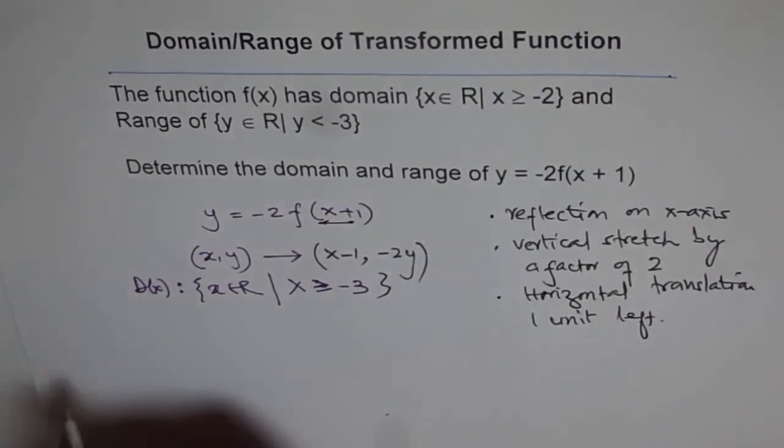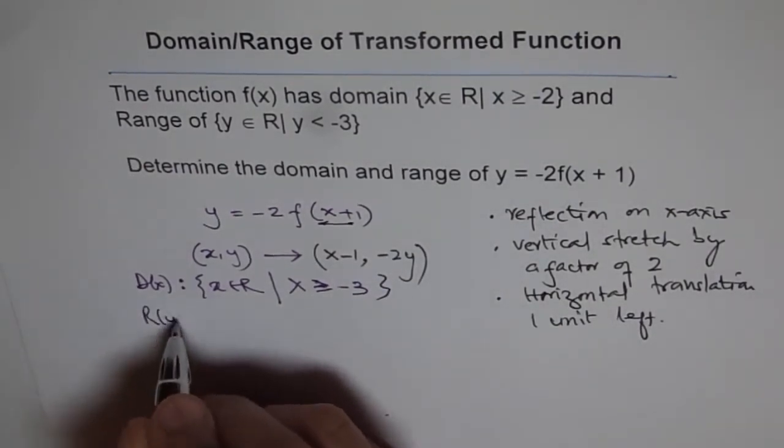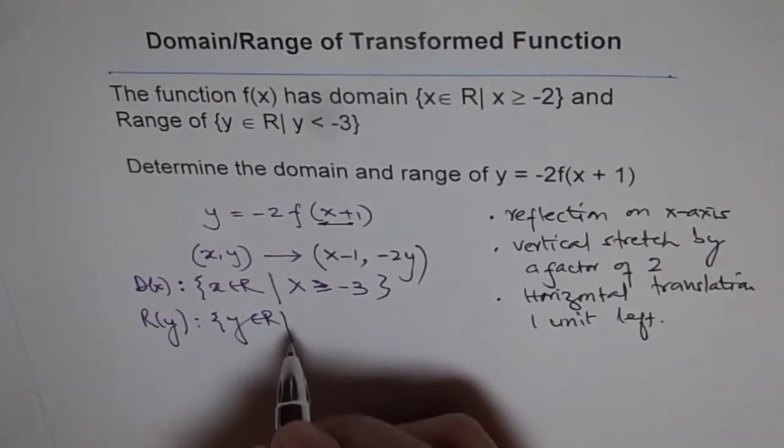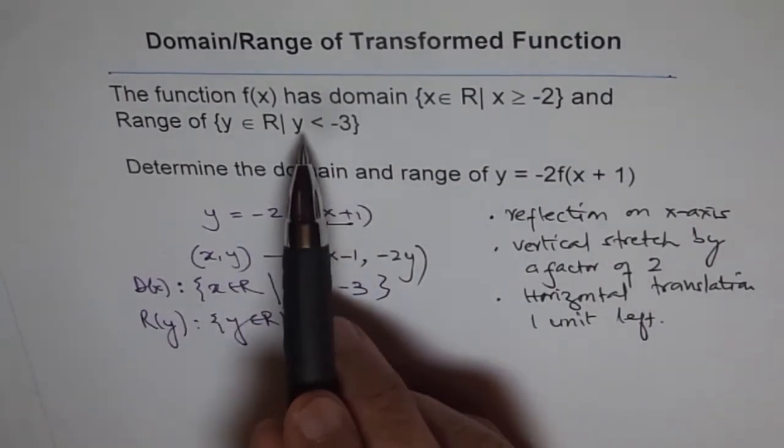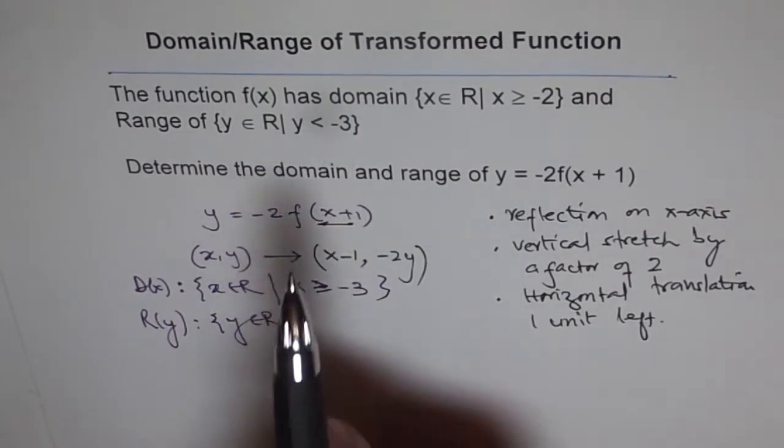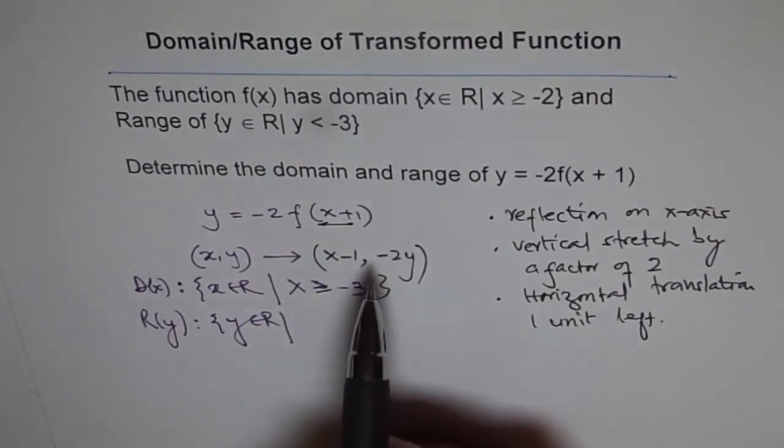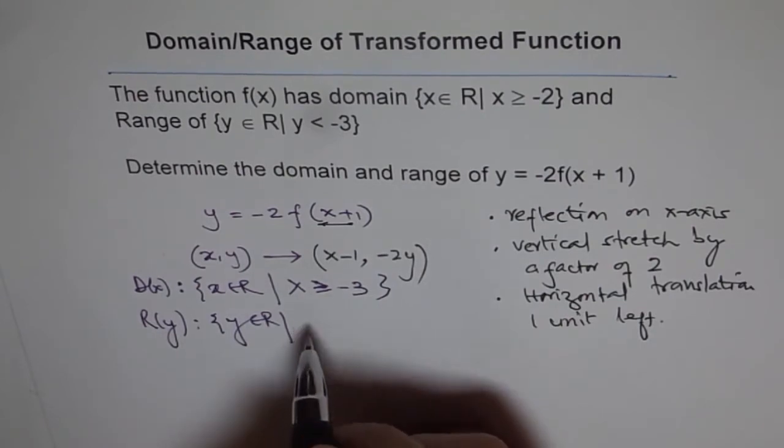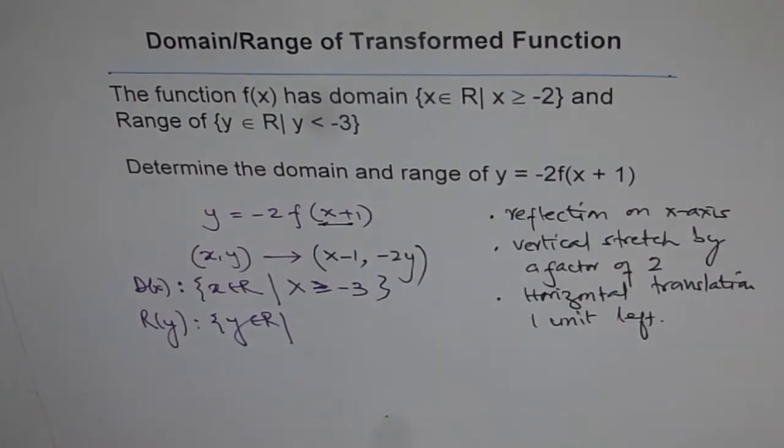For the range, we have y ∈ ℝ where y < -3. This gets multiplied by -2, which gives -2 times y. Let me work through how this affects the inequality.